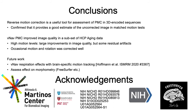To sum up: reverse motion correction is a useful tool for assessing prospective motion correction in 3D encoded sequences and provides good estimates of the uncorrected image in tests with matched motion. In the HCP aging data, VNAV prospective motion correction improved image quality. With high levels of motion we saw large improvements but also some residual artifacts; with occasional motion or rotation, correction worked very well. Future work will account for potential respiration effects via brain-specific motion tracking and assess the effect of image quality improvements on morphometry.